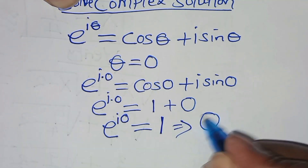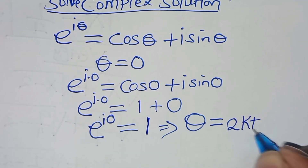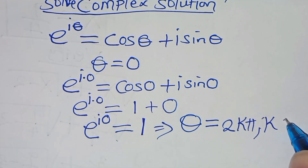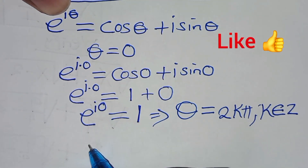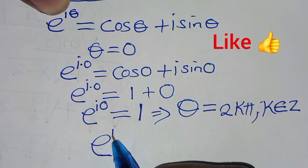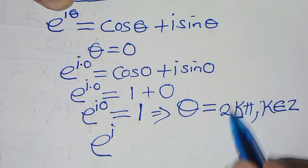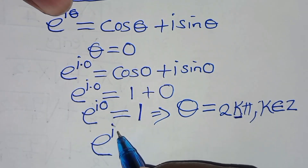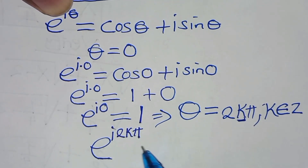This means that θ can be expressed as 2kπ, whereby k is a member of the integers. This implies that e to the power of i·2kπ is equal to 1.